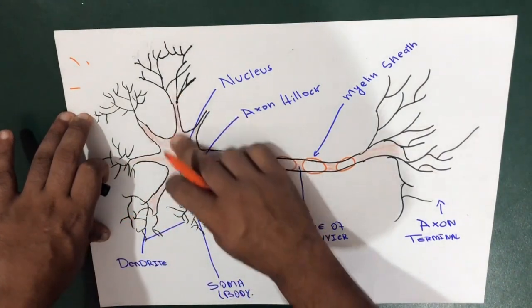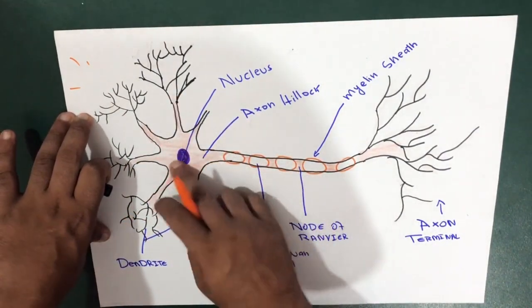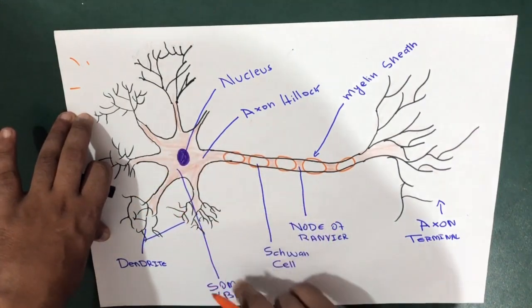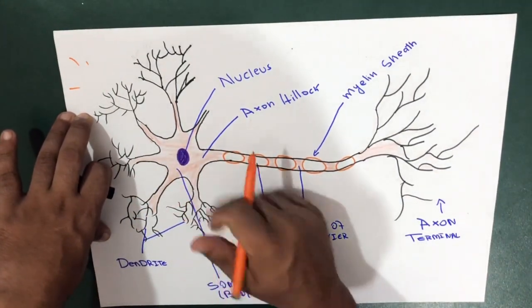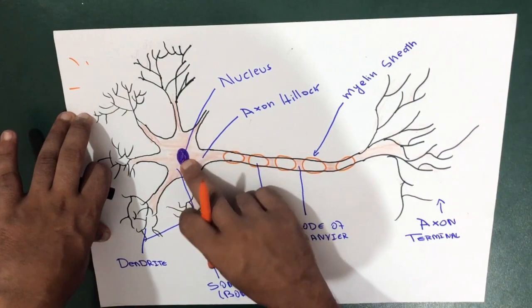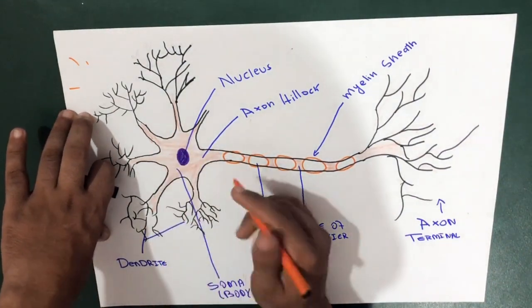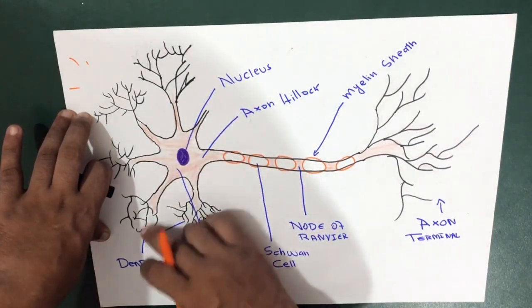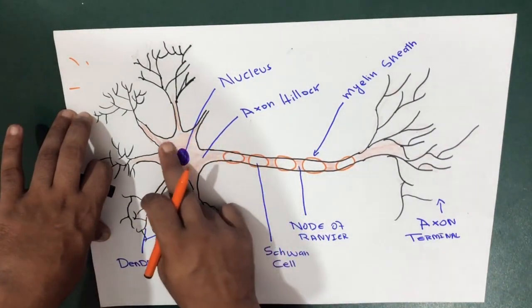From the dendrite, the information is received by this area, which is cytoplasm, but we call this area the soma, which is the body of the neuron. In the body of the neuron we have the nucleus and cytoplasm. Information moves from the dendrite to the soma.